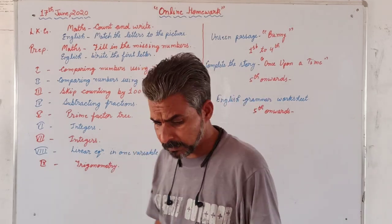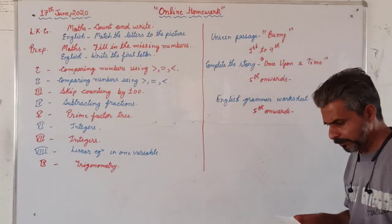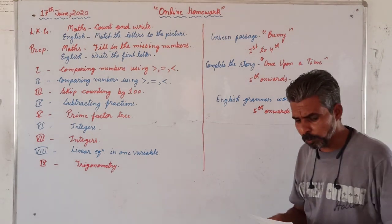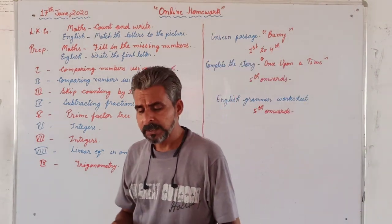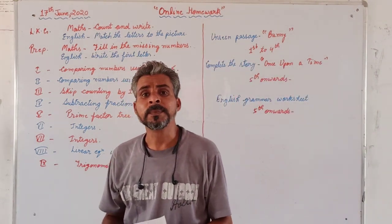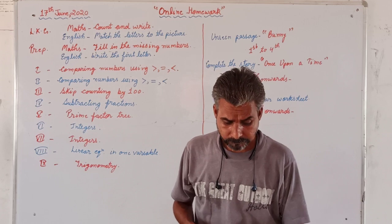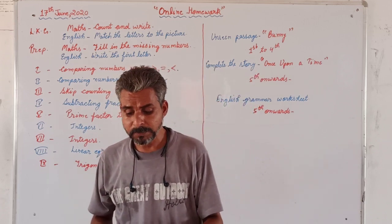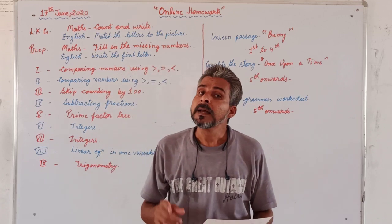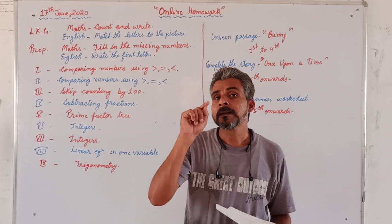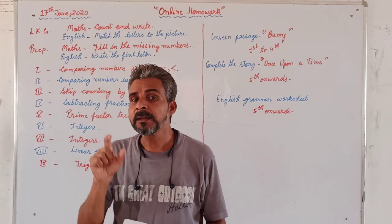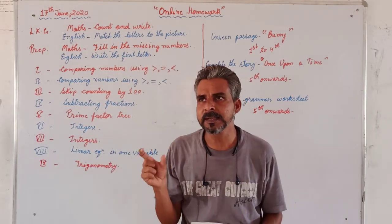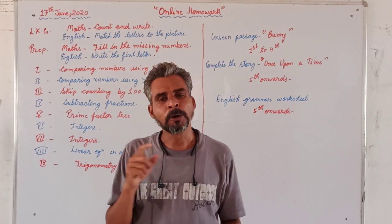For Prep class, we have provided a Math worksheet in which you are supposed to fill in the missing numbers. In the English worksheet, you have to write the first letter of the picture shown. For LKG it is match the first letter; for Prep class it is write the first letter. For example, elephant's first letter is E — write E.